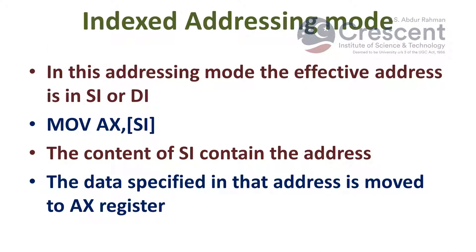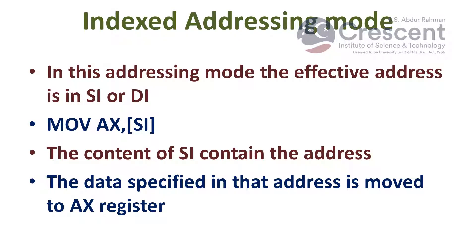The next type is indexed addressing mode. In this addressing mode, the effective address is in either the source index or destination index register. For example, MOV AX, [SI] — the content of SI contains the address, and at that address we have data. That data is moved from source index to destination register AX.